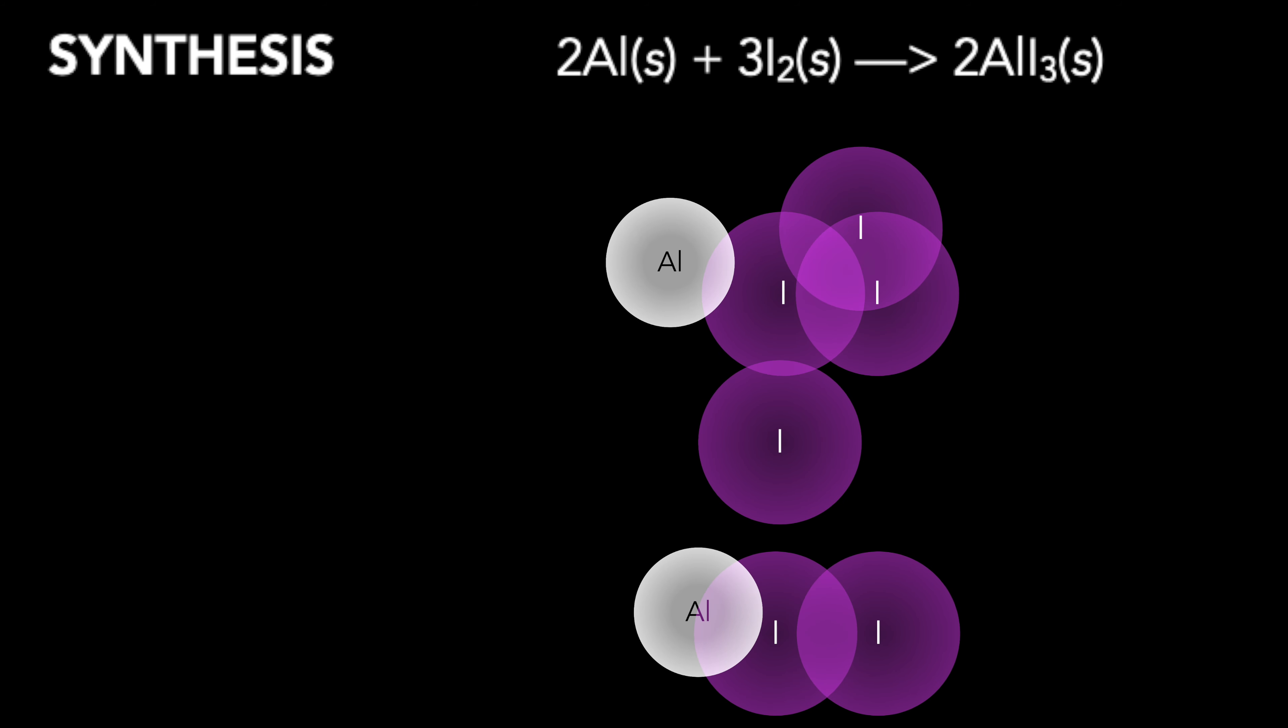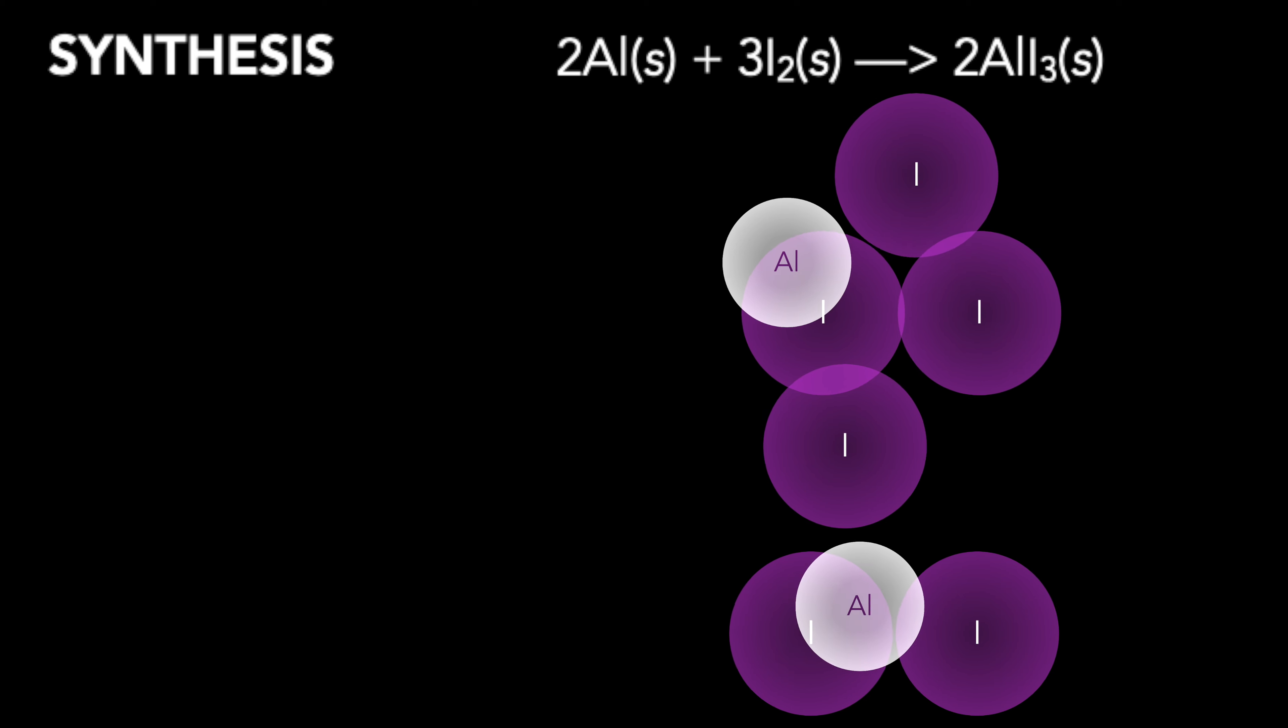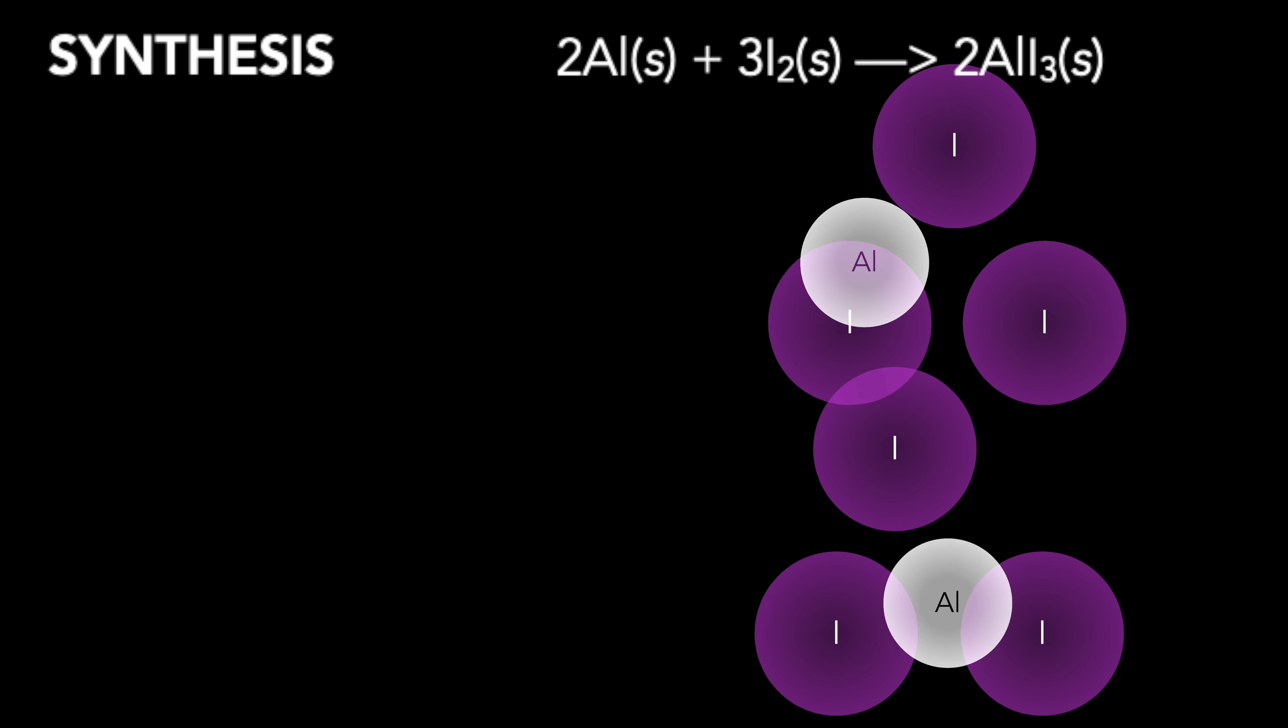For every one aluminum atom, we must have three iodide atoms to combine.